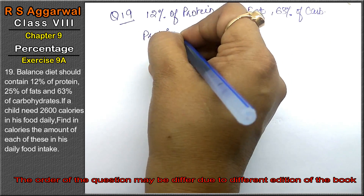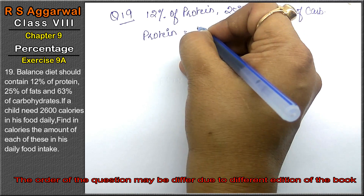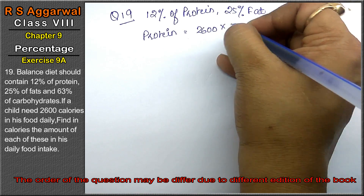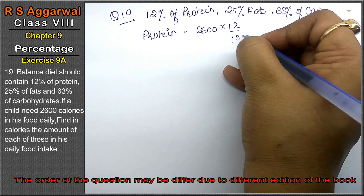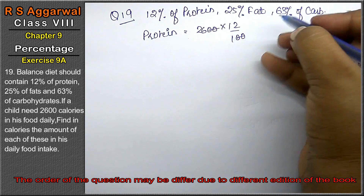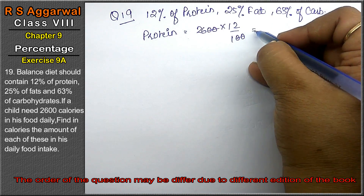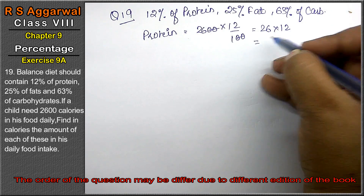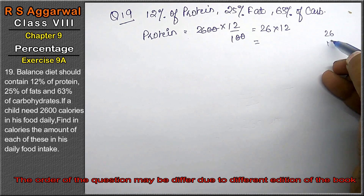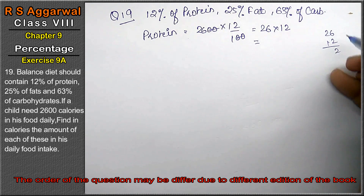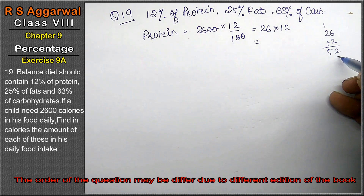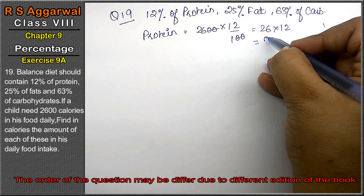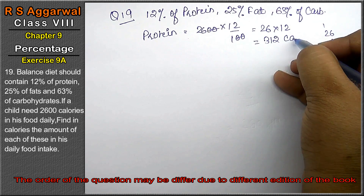Friends, protein kitna hoga — the total diet calories are 2600, and protein was 12%, so we take 12% of 2600. The 2600 divided by 100 gives 26, so 26 into 12 equals 312 calories of protein.